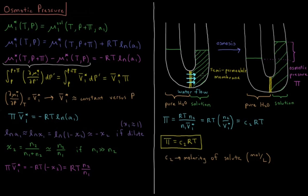What happens in this type of situation is a process called osmosis. The water is going to prefer to flow across the barrier from the pure water into the solution, and it's going to do so until the solute reaches a certain diluteness, with a higher amount of solution on the right relative to the left.